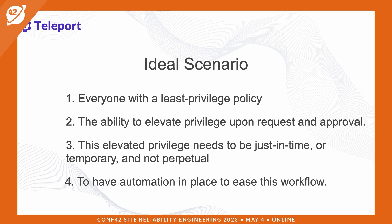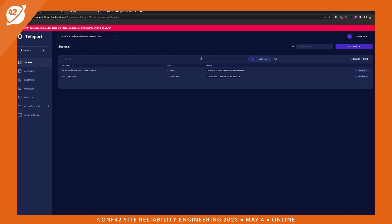Taking a look at our ideal state, let's compare it with what Teleport offers. Number one, Teleport has a built-in RBAC system to configure least-privileged policy for users. Number two, Teleport provides the ability to elevate privilege upon request and approval. Number three, these elevated privilege requests are just-in-time and not perpetual. And number four, Teleport integrates with tools like Slack and PagerDuty to provide automation to ease the workflow of requests and approvals. We're going to look at three examples now.